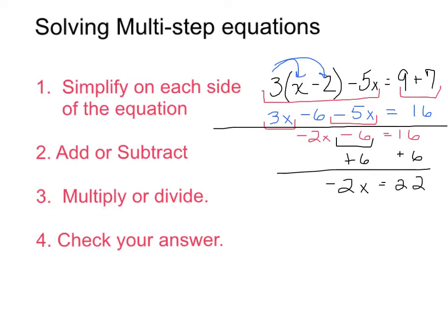My third step will be to multiply or divide. This should be at the step where I have a one-step equation. So I'm going to divide by negative 2 on both sides. My x is going to equal negative 11.